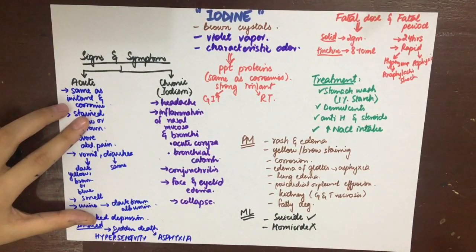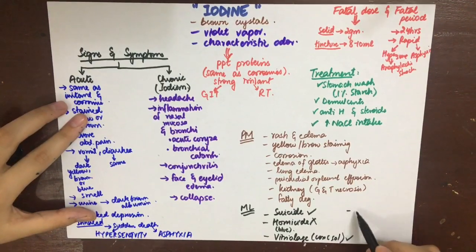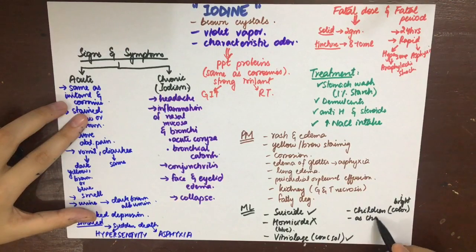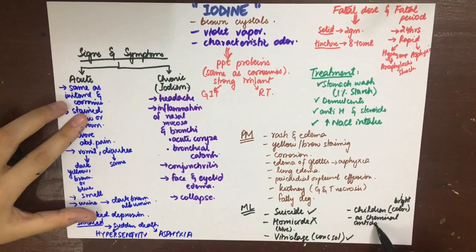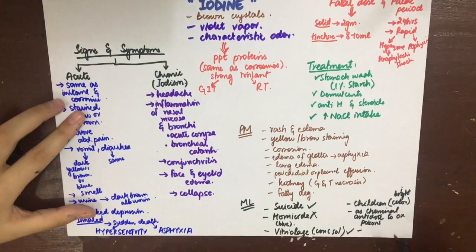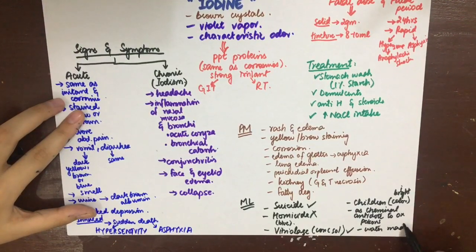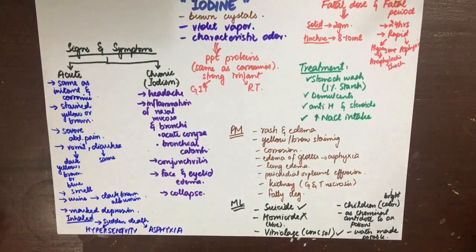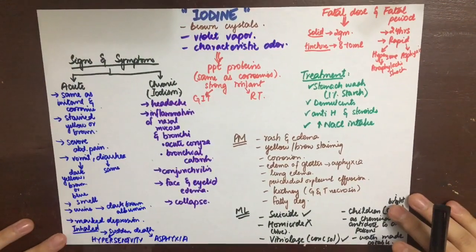Regarding medico-legal aspects, iodine can be used for suicide but is not used for homicide because any food containing starch turns blue when iodine is added. It can be used in vitriolage using a strong solution. Children can be attracted to its bright color, causing accidental poisoning. Iodine can be used as a chemical antidote against oxidizable poisons using a weak solution, and water can be made drinkable by adding iodine.